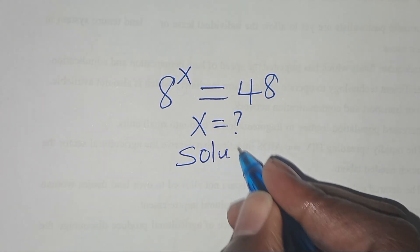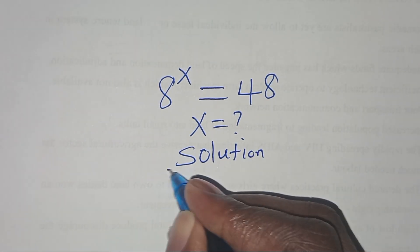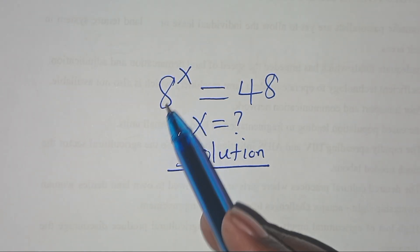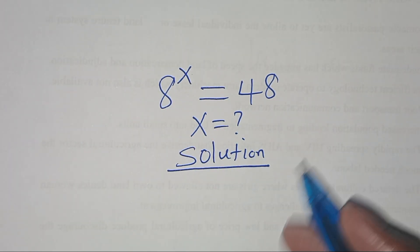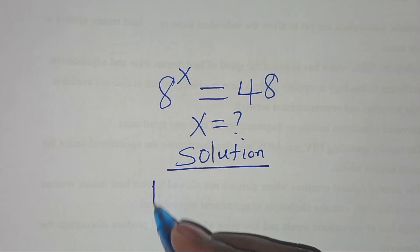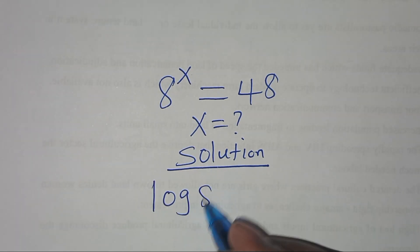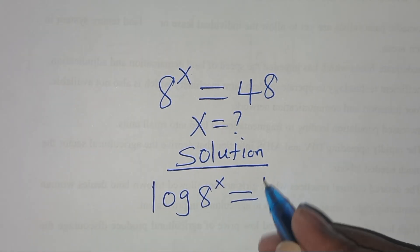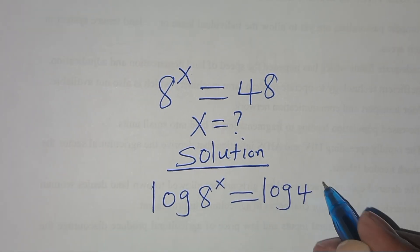Solution from here. To solve for x, we introduce the natural logarithm on both sides, so that we'll have ln(8^x) equal to ln(48).